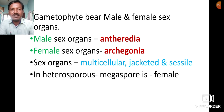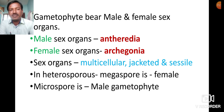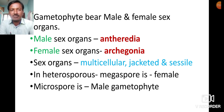In heterosporous plants like Salvinia and Selaginella, the megaspore acts as the female gametophyte (large spore = female gametophyte) and the microspore acts as the male gametophyte.